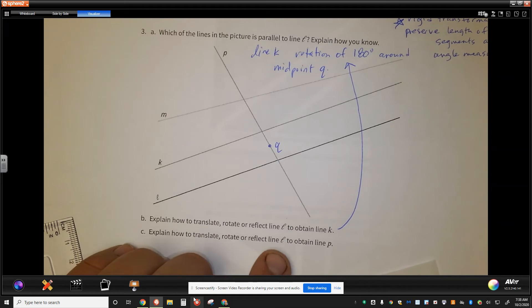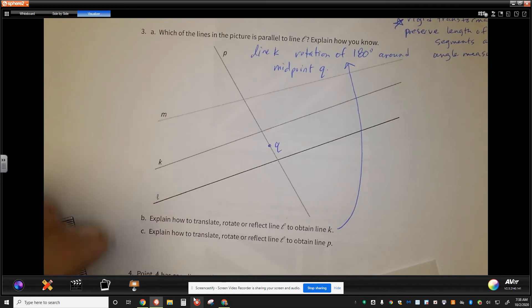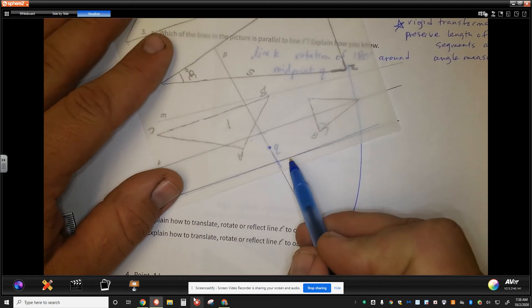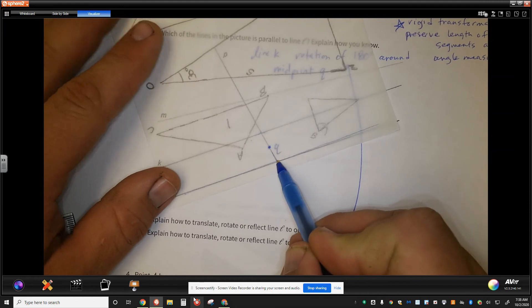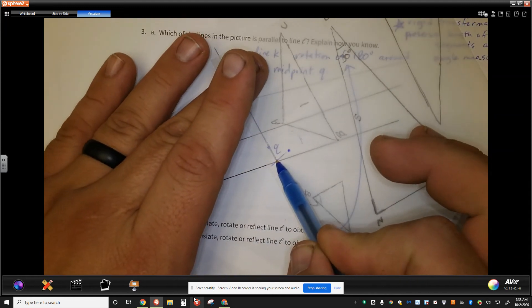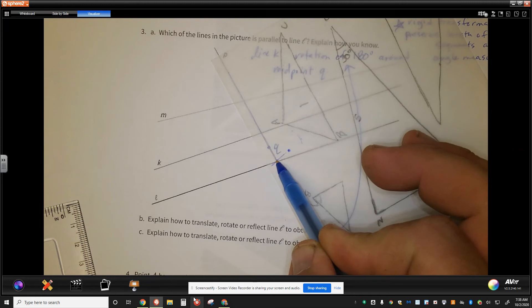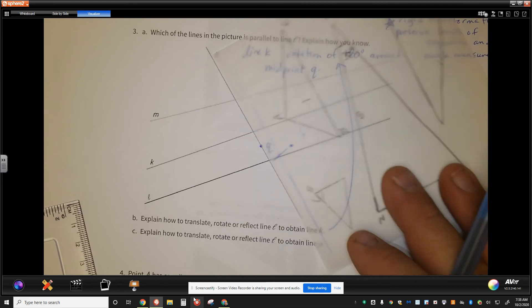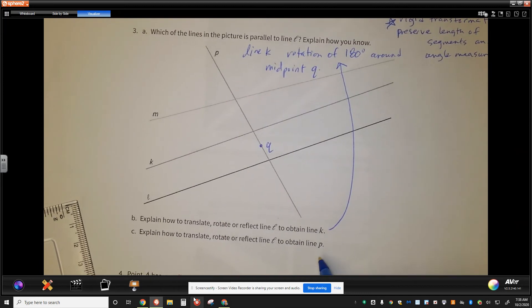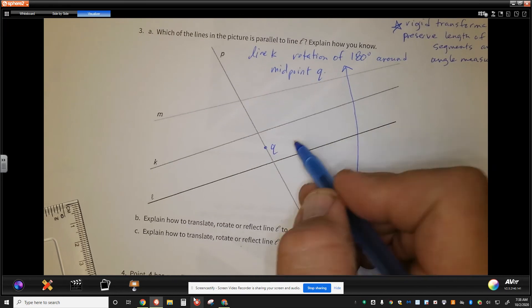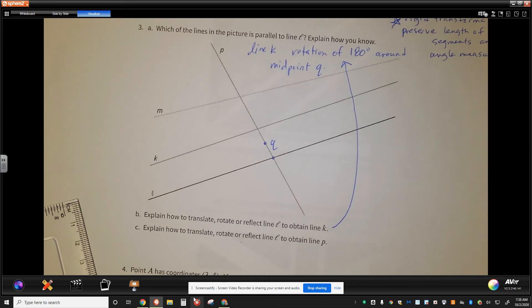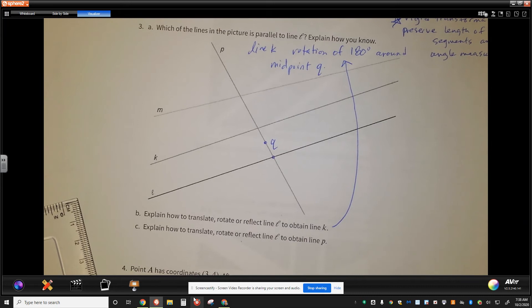Explain how to translate, rotate, or reflect line L to obtain line P. Well, how would I do that to obtain line P? I'd have to look at this and perform a rotation of a certain number of degrees. Well, you remember in the last couple lessons ago, we talked about rotation of D degrees. That would be the piece there, or I can pull out a protractor and measure that. Since I don't have those, I'm just going to say that how I could rotate around the center of those two lines where they have a common center point until line L matches line P or maps line P.